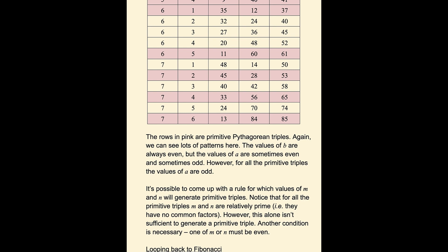However, this alone isn't sufficient to generate a primitive triple. We can see that right here with 7, 1. Those are relatively prime, but it didn't generate a primitive.